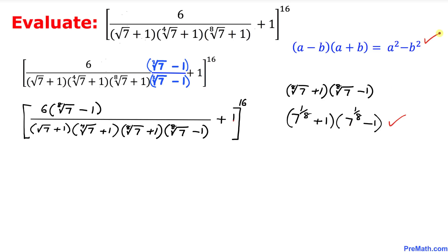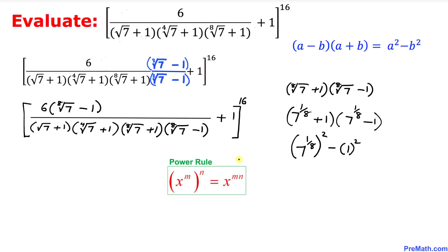We can see that these two factors represent the product of a sum and a difference. Therefore we are going to use the well-known formula: (a minus b)(a plus b) equals a squared minus b squared. Therefore I can write these factors as 7 to the power 1/8, squared, minus 1 squared.